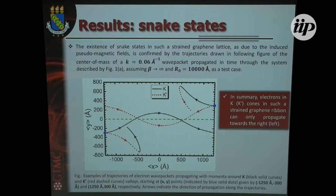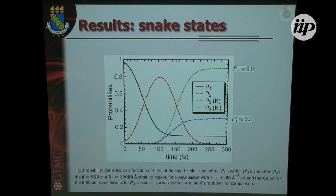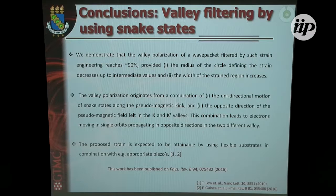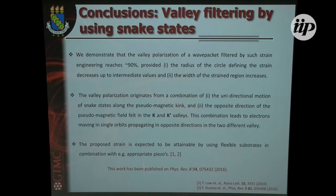Once that I have just five minutes, in the next slide and also in the published PRB paper, we were looking for the parameters that optimize this valley filtering. What you obtain is that if you increase the scattering region, you optimize this effect. Maybe some experimental people here are asking how can they do it experimentally — there are some papers claiming that you can take a flexible substrate, use some appropriate pieces, and achieve this kind of sample.